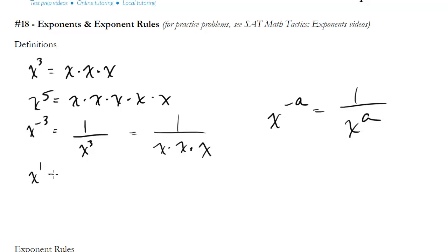x to the one is just x — we don't write the one usually because it's assumed when we have just an x by itself. How about x to the zero? Well, anything to the zero is just equal to one. So a thousand to the zero is one, a trillion to the zero is one. It doesn't matter.